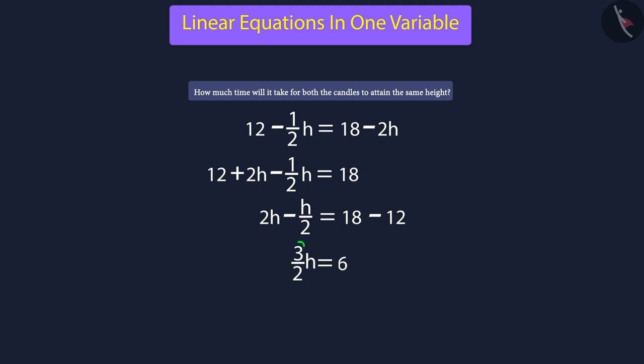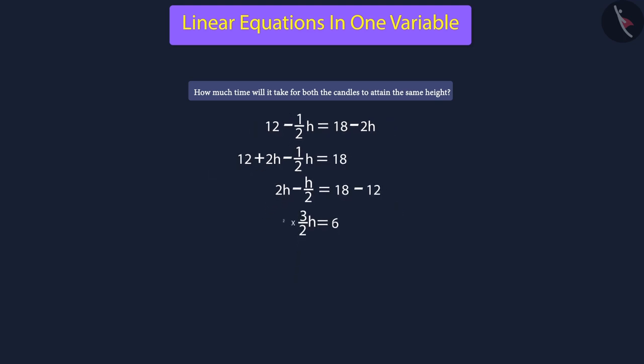Since 3 by 2 is multiplied by h, we must remove 2 from the denominator and multiply both sides of the equation by 2.